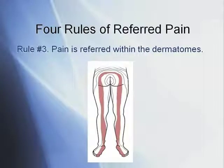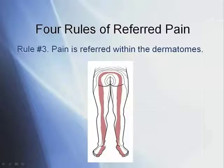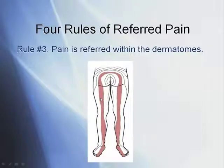Rule three: pain is referred within the dermatome. Dermatomes are the embryological pieces that make up our body, and each one forms different parts. For example, one dermatome covers part of the buttock, part of the sacrum, down part of the inner leg, part of the inner calf, and into the big toe. When pain is referred from a ligament or muscle, it follows this dermatomal pattern — so knowing dermatome patterns lets you often figure out what's going on just by listening to the patient.